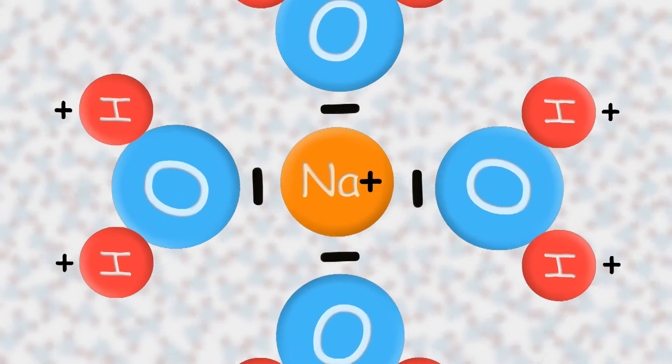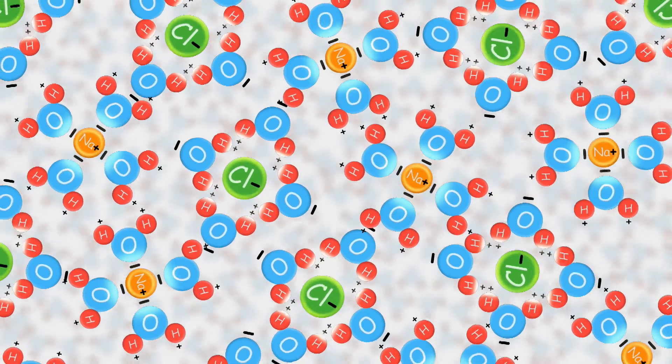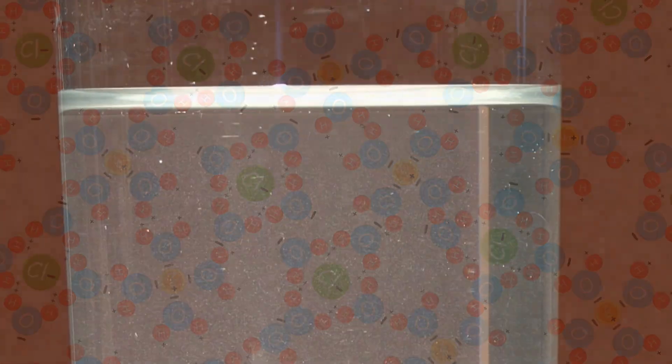The negative sides of H2O molecules swarm the positive sides of the solute molecules. All that swarming and surrounding breaks the solute into tiny isolated components, which can then be carried away by the cohesive H2O mob.